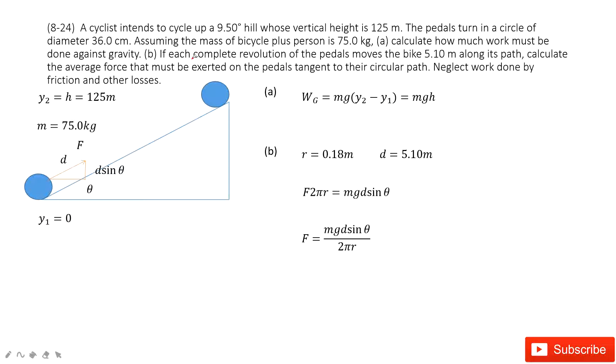the second problem asks you if each complete revolution of this bicycle moves the bike 5.1 meter along its path. So we need to find average force must act to this bicycle. How can we do that? First of all, let's assume at one cycle, the bicycle moved is d. This d is just 5.1 meter.